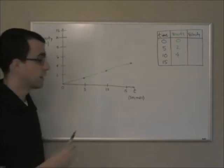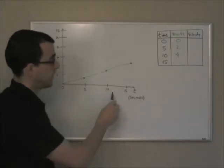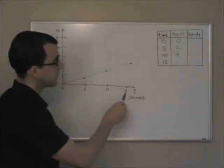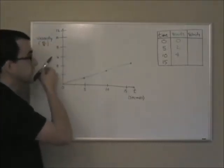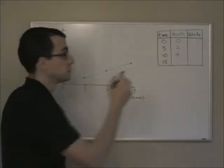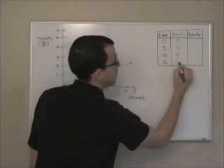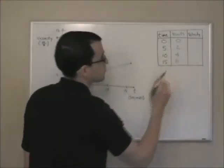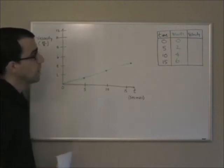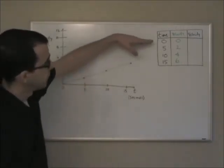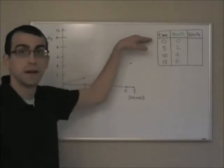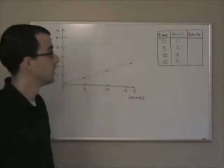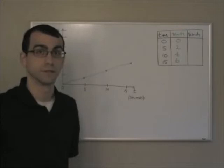Finally, increasing by another five seconds to fifteen seconds total, the velocity again increases by two meters per second and is now at six meters per second. So for every five-second interval, our velocity has increased by two meters per second — and this is what we mean by constant acceleration.